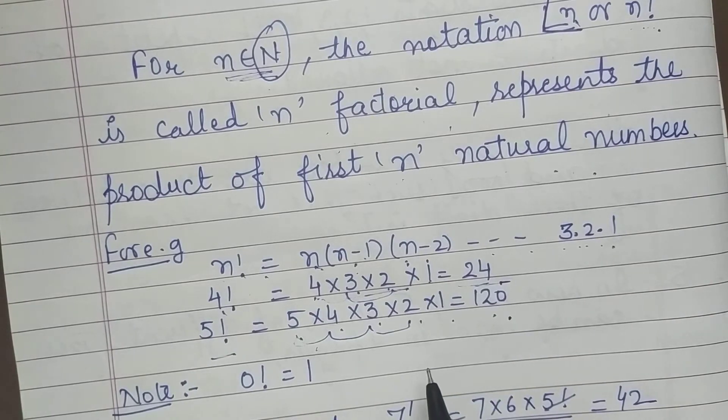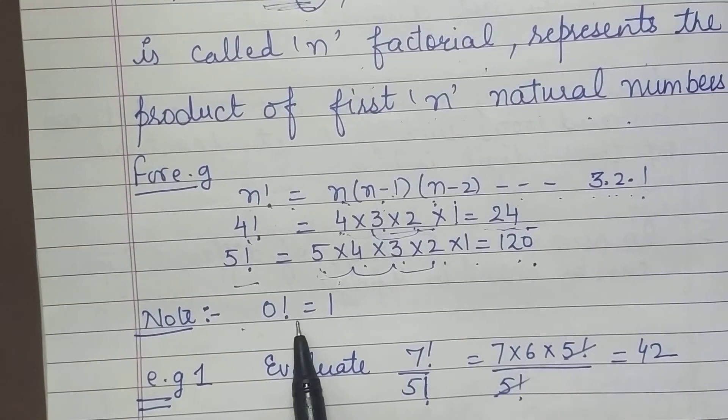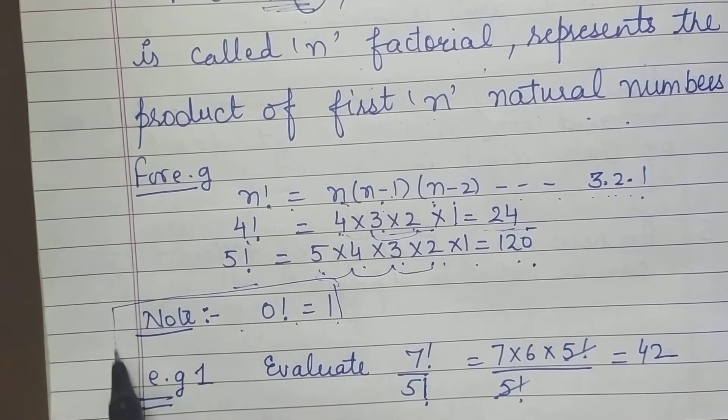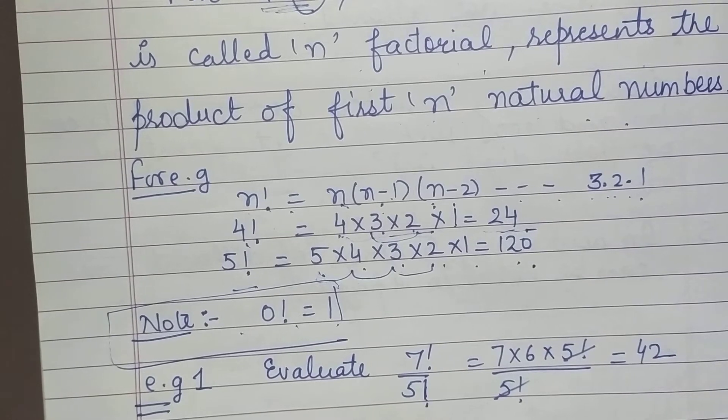And keep in mind this thing. One more thing here. Note that 0 factorial value is always 1. You have to remember this point. 0 factorial is 1.